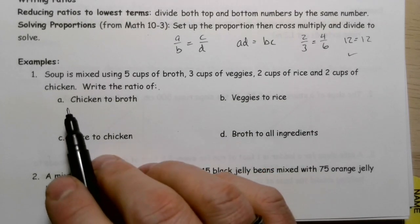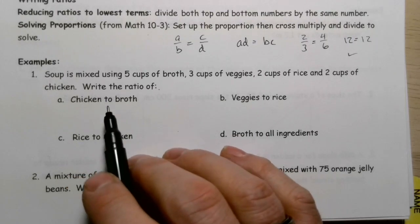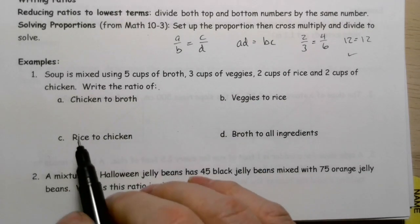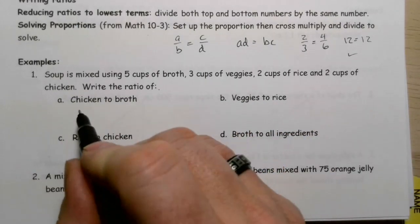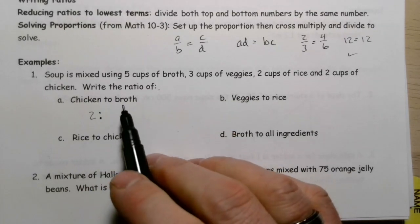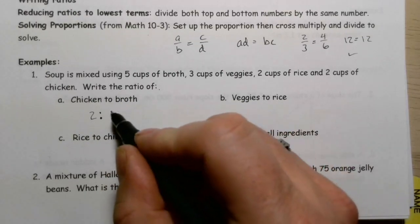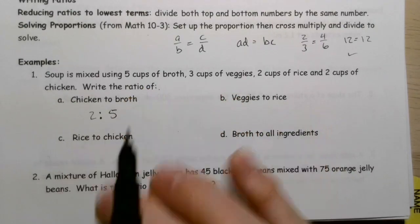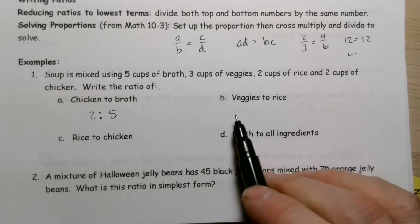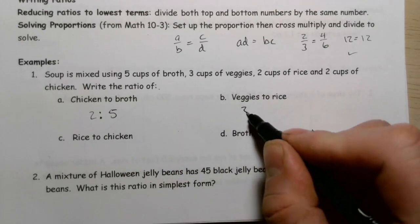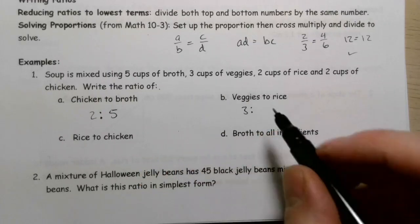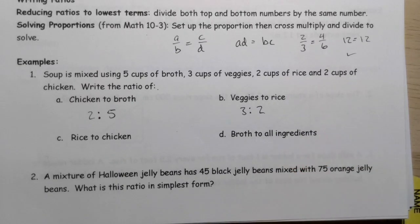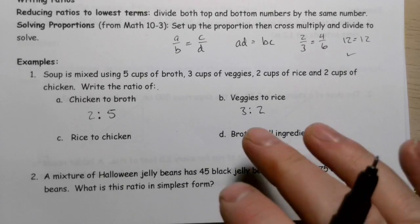Remember in a previous lesson when we were talking about writing out the ratios, the first number that's mentioned becomes the first number that we write. So let's go through here and look at chicken - 2 cups of chicken. And compare that to broth - 5 cups of broth. So 2 to 5. Now, 2 and 5 are both prime numbers, so that is as simple as that's going to get. Veggies to rice - veggies comes first, 3 cups of veggies to 2 cups of rice. So 3 to 2. And again, 3 and 2 are both prime numbers. I cannot reduce those any further.